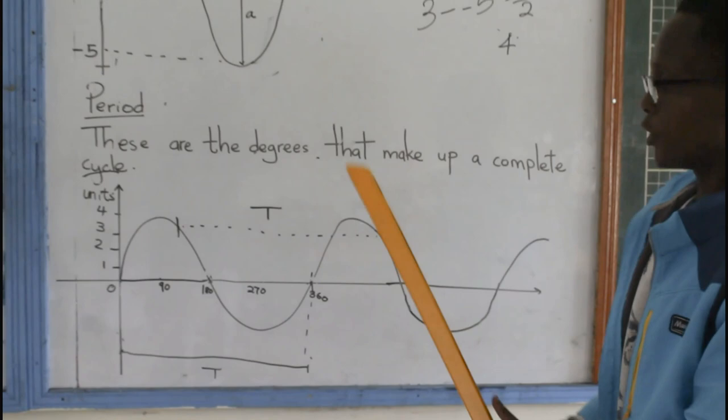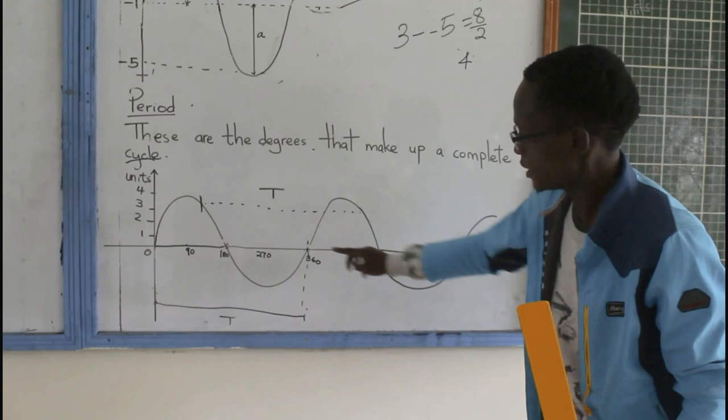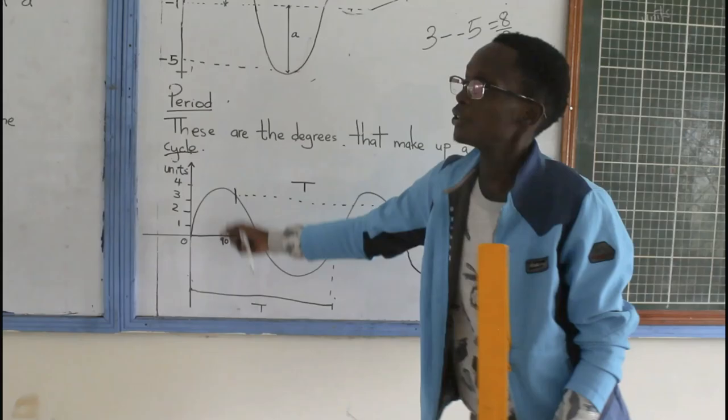However, there's some cases where you might find the cycle beginning from this point to this point. So, you just find the difference in degrees. The final degree here is 360. It's similar to here. You just read beneath and find your period.